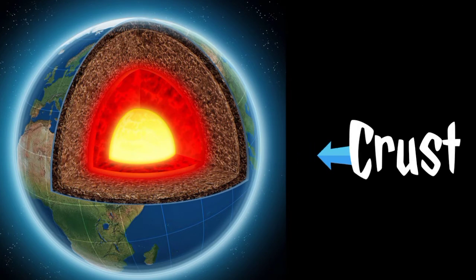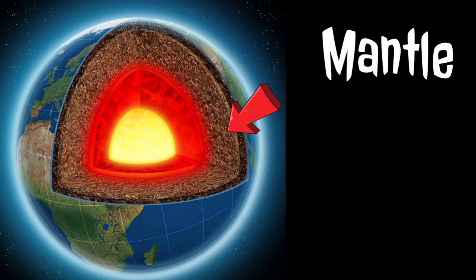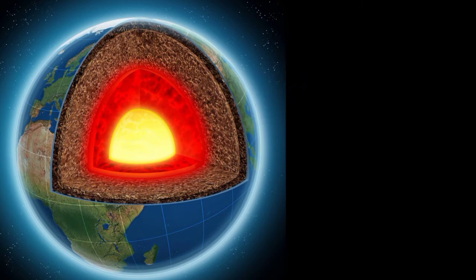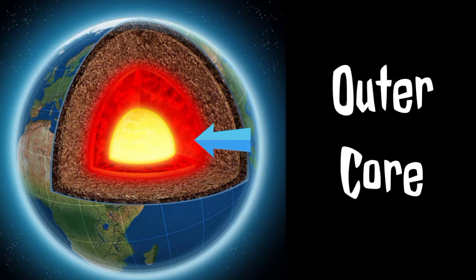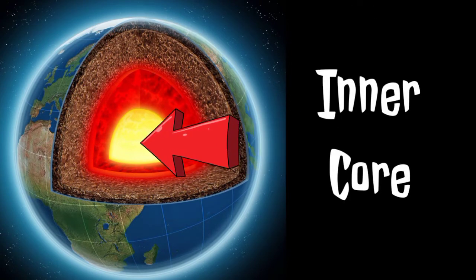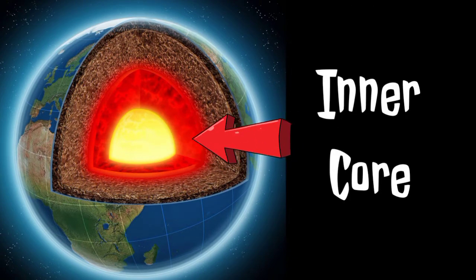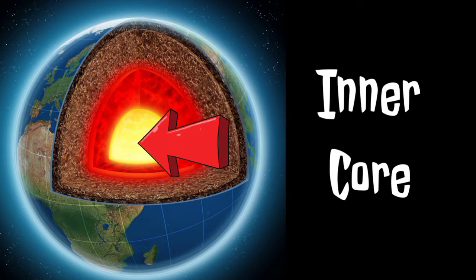The crust is the thinnest layer of the earth, built from rock and mineral solids. The mantle is made up of molten iron and silicate rocks, and lies between the core and the crust. The outer core is composed of iron and nickel, and is the only layer that is liquid. The inner core spins faster than the surface of the earth, and its temperature is extremely hot.